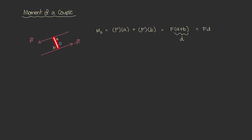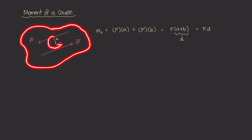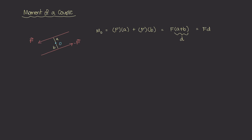D is the entire distance between these two forces. If we had some body that these two forces were acting on, these two forces are not going to cause the body to translate or move in one direction — it's not going to move left, right, up, or down. Instead, it's going to cause that body to rotate, and that rotational moment is M_O. That is what we mean by moment of a couple. These two forces create a couple, and those two forces cause a moment equal to the magnitude of F times the distance between them.